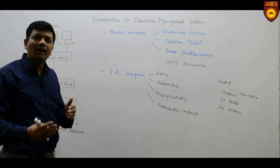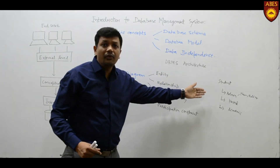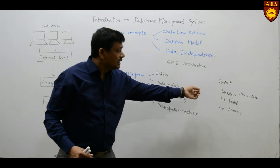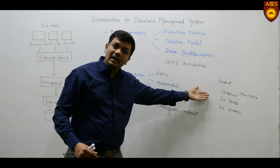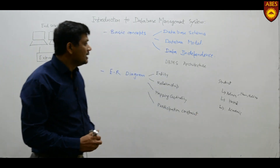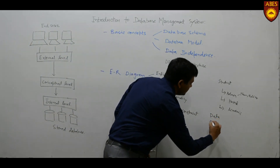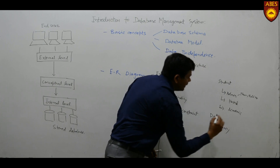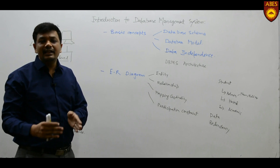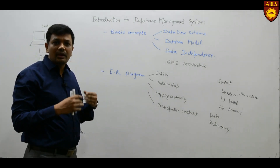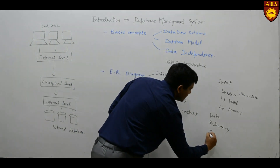If you as a student need to update some record, you have to approach all three departments separately. If you forget to update a particular attribute, it may happen that information like your roll number or phone number is one value in one place and a different value in another. The repetition of values is known as data redundancy.